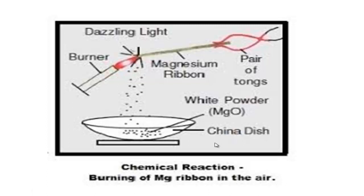If a question asks you to explain the combustion reaction of magnesium, after writing the answer you can draw a diagram. Draw a flame burner with a flame, then a pair of tongs — we hold the magnesium ribbon with tongs, not with our hand. When held in the flame, it makes a dazzling bright light. After the reaction, white ash of magnesium oxide remains and falls like white powder, which you can collect in a china dish.